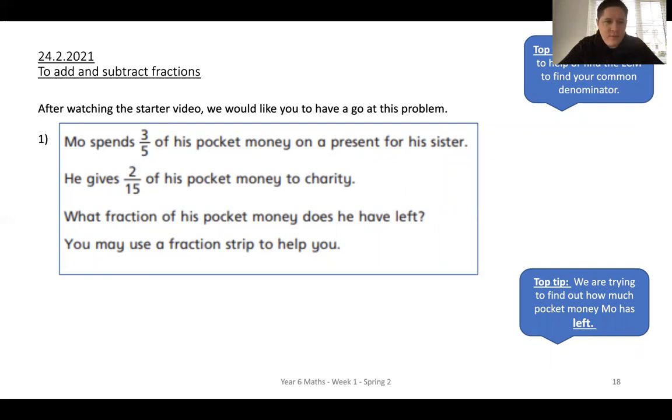Now, the whole, if we've got fifteenths, there's a clue to your common denominator. If you've got fifteenths, then your whole is going to be fifteen fifteenths. So convert his pocket money into fifteenths. I'll tell you that one. Three-fifths needs to convert into fifteenths. You should be able to do that by now. Then add on the two fifteenths that he also gives to charity. What's your total? And then how much has he got left if he started with fifteen fifteenths? Have a go. If you're going to use a fraction strip, you need to have fifteen boxes in your strip to start with because that's your whole.